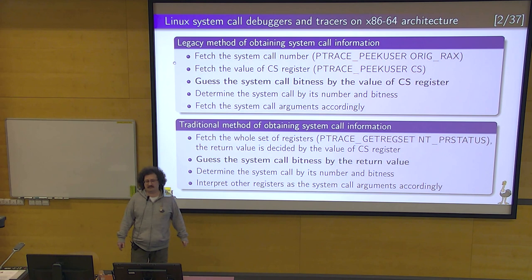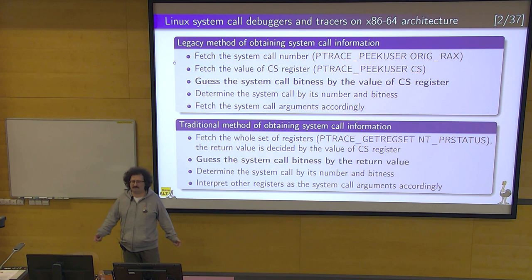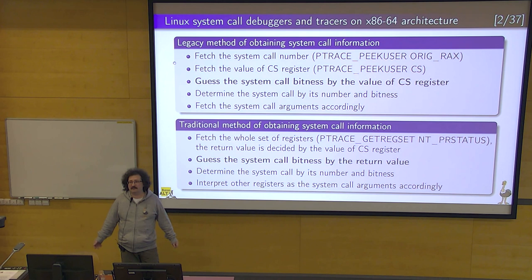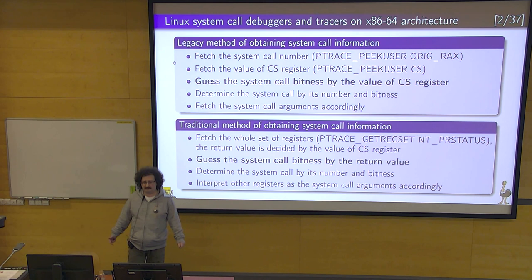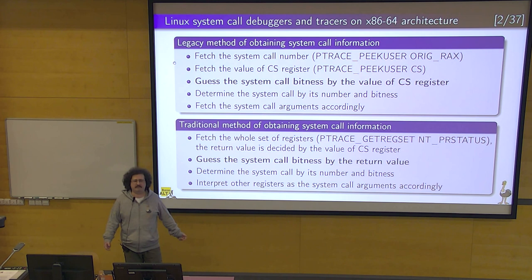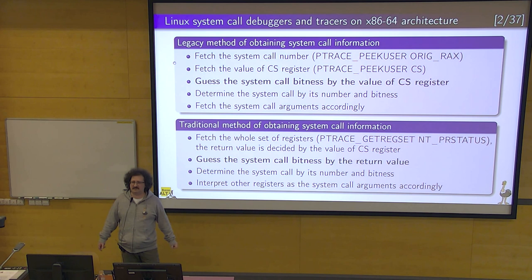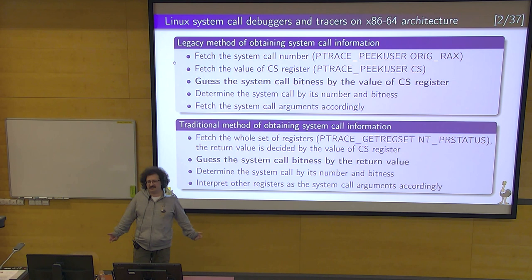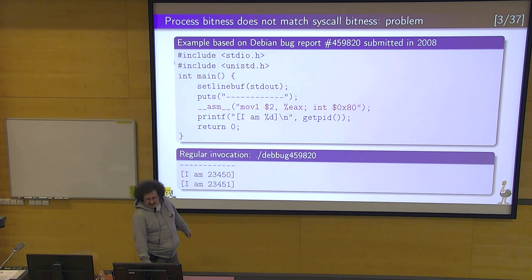They were working this way. Later, a slightly faster method of obtaining registers was introduced in the Linux kernel, so tracers started fetching the whole register set. But the register set sent by the kernel depends on the bitness of the process, so from a system call bitness perspective, nothing changed. There is no direct link between process bitness and system call bitness, except that usually they match — but sometimes they don't.